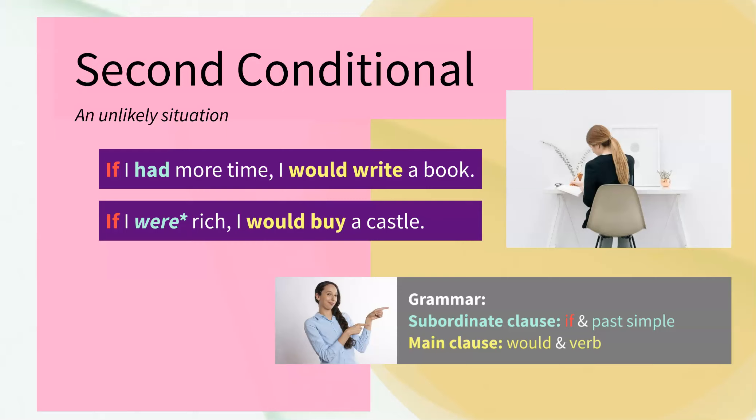When you say 'if I were rich,' this is the second conditional and it's also the subjunctive. In this example, we're using the subjunctive to talk about what you're imagining — and that's why we say 'if I were rich,' because you're imagining it, rather than 'if I was rich.' The subjunctive is very formal and it's not used often in everyday speech, but it is on the Key Stage 2 curriculum, and that's why I'm including it here.